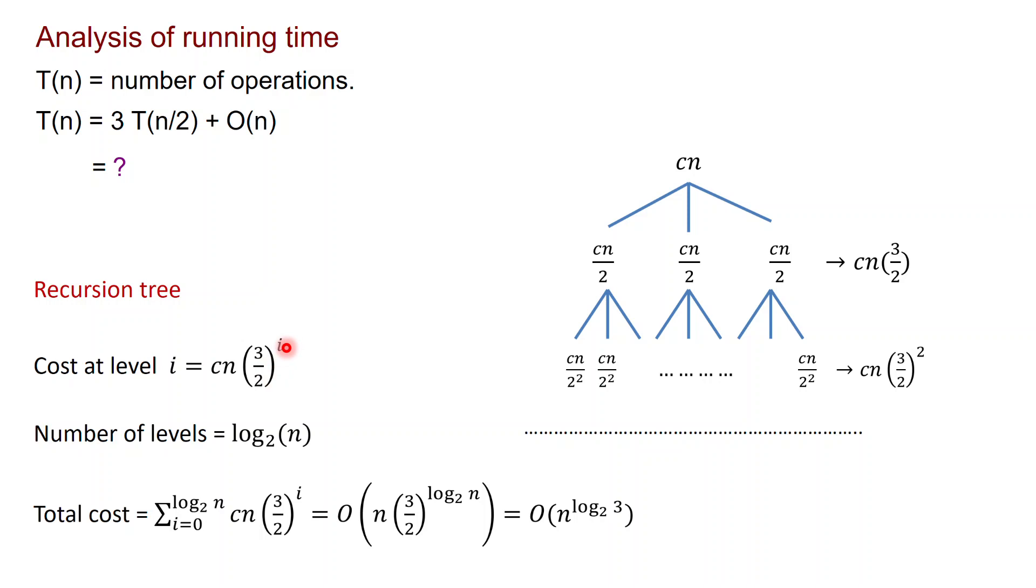Now how many levels do we have? Well, each time we divide the number of digits by half, so the number of levels is log base 2 of n. So the total cost of this recursion tree is the sum of cn times three halves to the i, for i that goes from 0 to log base 2 of n. We need to know how much this sum is. Now this is a geometric sum, so the largest term dominates.